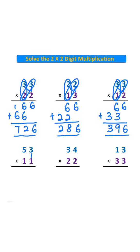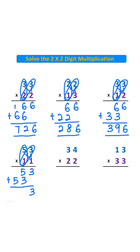3 times 1 is 3. 5 times 1 is 5. 3 times 1 is 5. 3 plus 0 is 3. 5 plus 3 is 8.